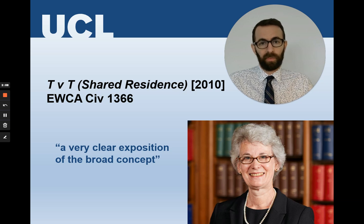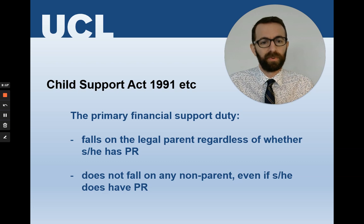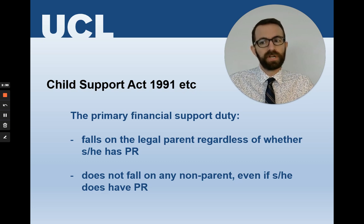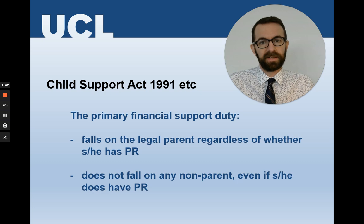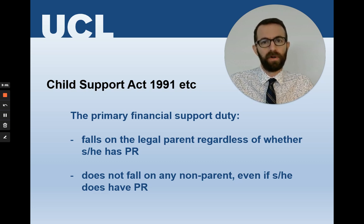So let's start by illustrating some of the ways in which it's actually wrong. The first and most clear example is child support. The law imposes an obligation to provide financial support for a child, and this is one of the most fundamental duties that a parent has. But if you look at the Child Support Act 1991 and its subsequent legislation, the primary financial duties that the law imposes are imposed on the person who is a legal parent of the child. That is connected, but not the same as the question of who has parental responsibility. In particular, for people who aren't the birth mother, the rules about who has parental responsibility are not the same as who is a legal parent.